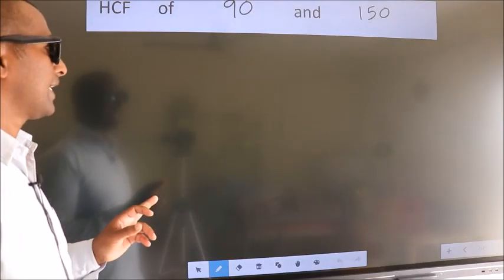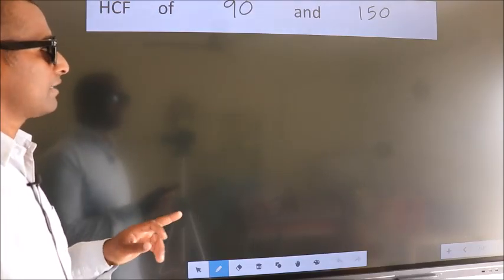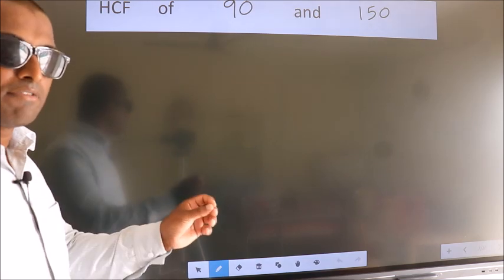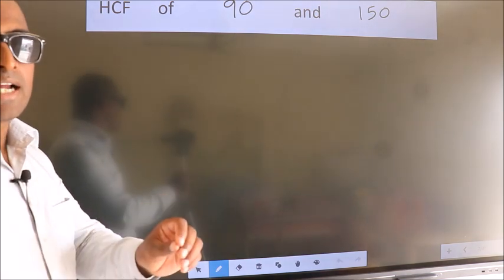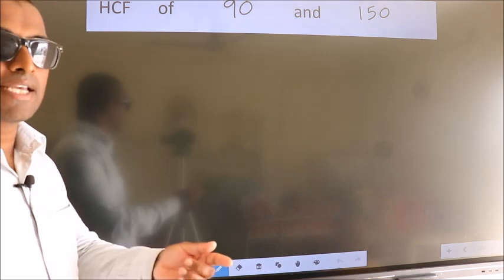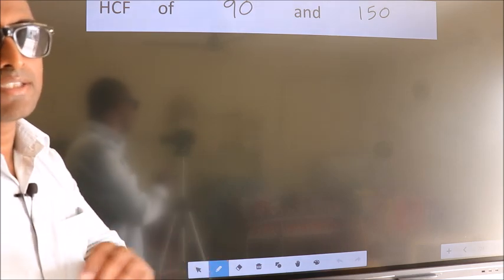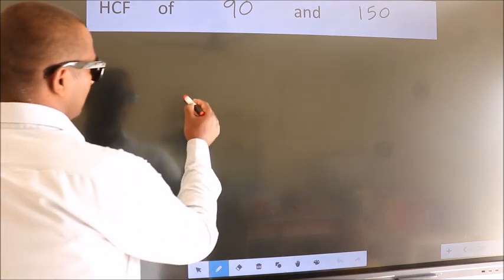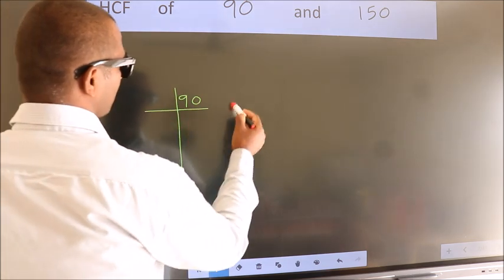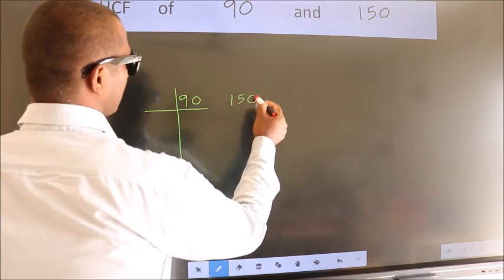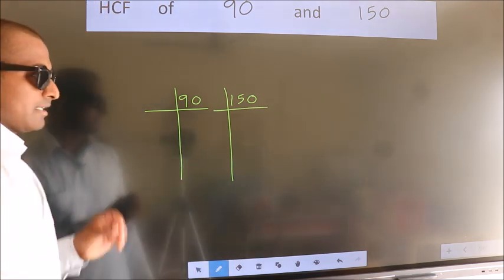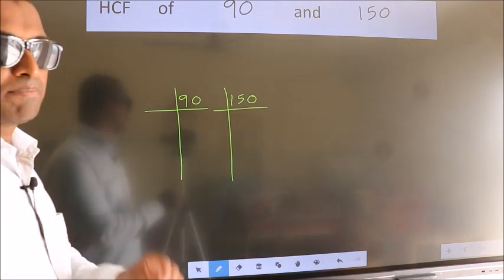HCF of 90 and 150. To find the HCF we should do the prime factorization of each number separately. We write 90 here and 150 here. This is step 1.